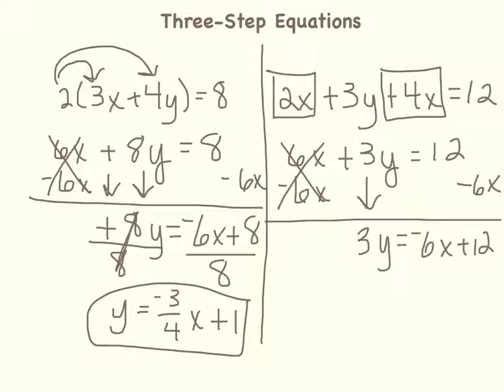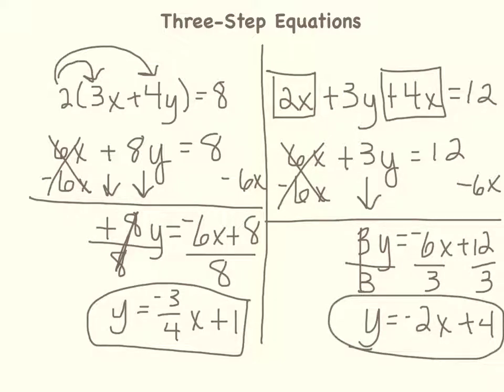Now I'm ready for the third step, which is to separate the coefficient of 3 from the y, and I do that by division. So at this time, I'll show it as dividing each term. 3 divided by 3 is 1, so I have y equals, well, negative 6 divided by 3 is negative 2, so I have negative 2x. And then 12 divided by 3 is 4. So my solution is y equals negative 2x plus 4.